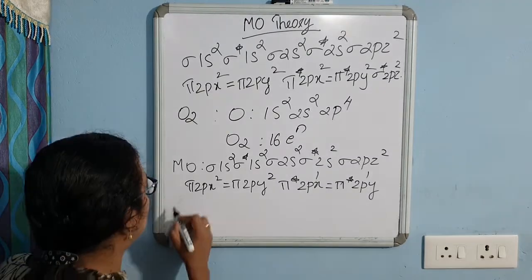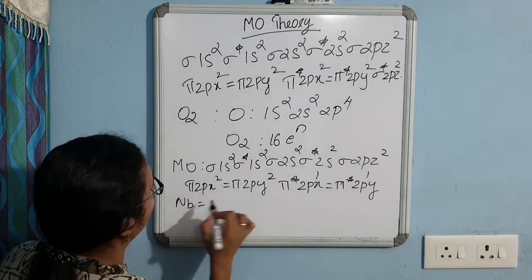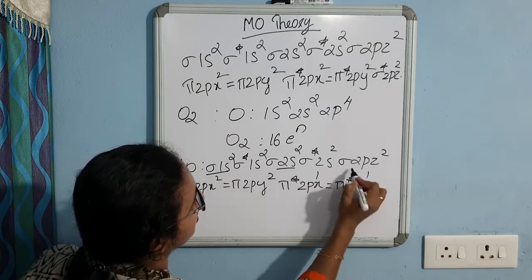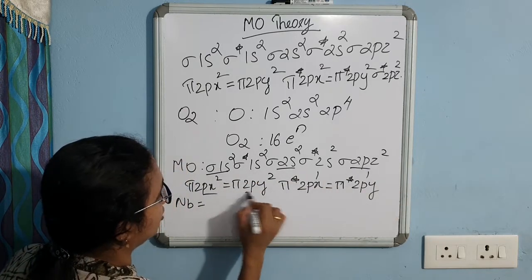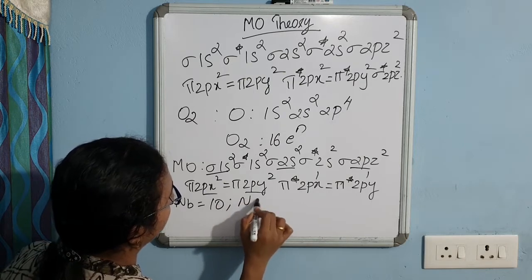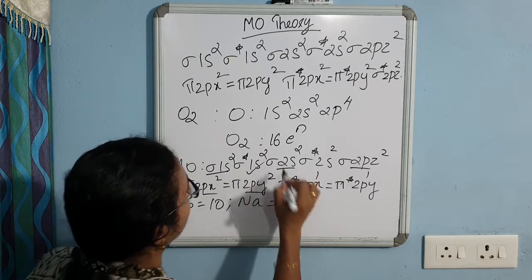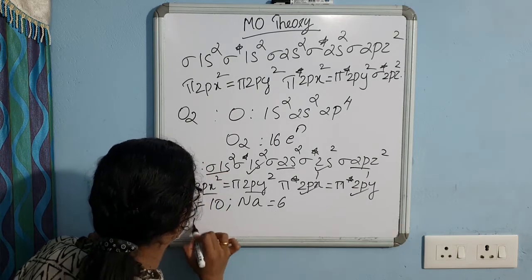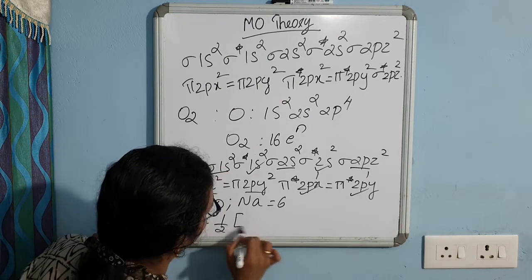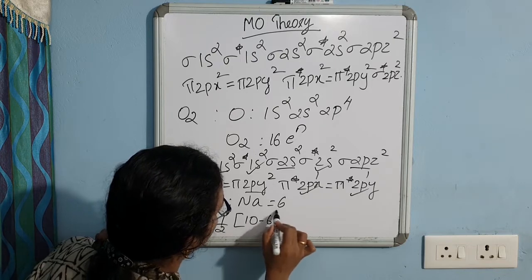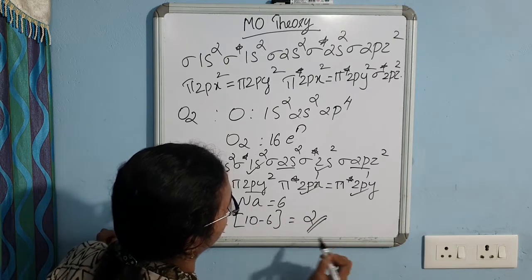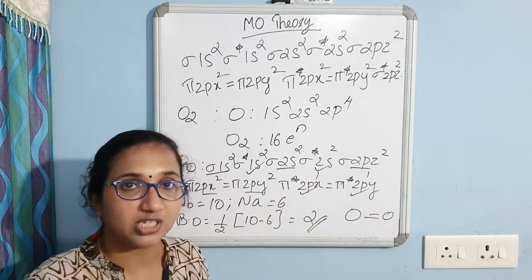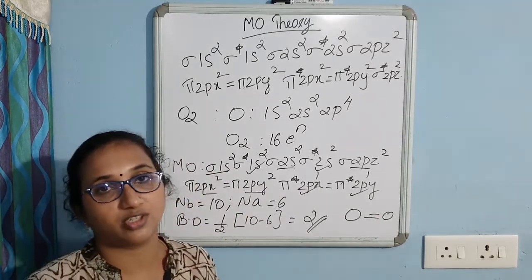Now let us count the number of electrons in bonding orbitals: 2, 4, 6, 8, 10 — so 10 bonding electrons. The number of electrons in anti-bonding orbitals: 2, 4, 6 — so 6 anti-bonding electrons. Bond order = ½ × (10 − 6) = 4/2 = 2. This means there is a double bond between the two oxygen atoms in the oxygen molecule.